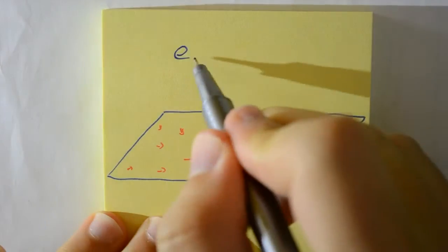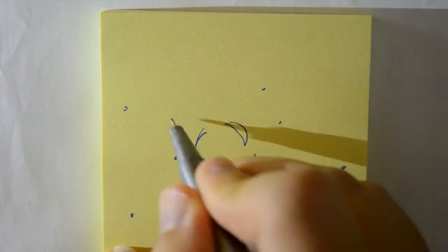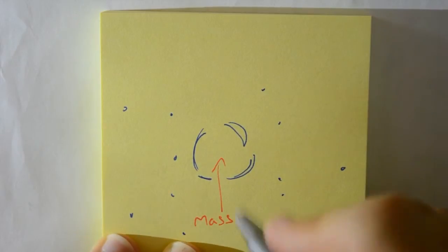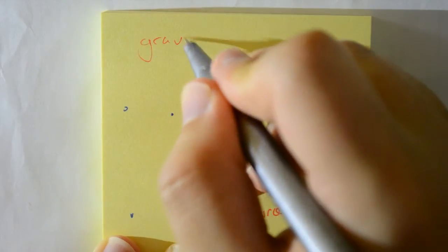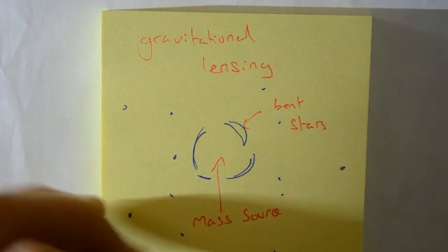Einstein also said that energy and mass is equivalent. So this means gravity must also affect energy, such as light. And this is true, we can actually test this. We can measure the mass of distant galaxies because they bend the light of stars behind them. And the more they bend the light, the stronger the gravity is, and also the more massive the galaxy must be because of this.